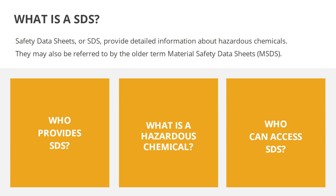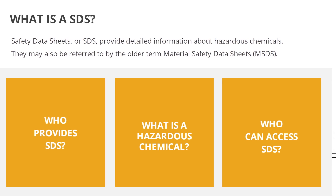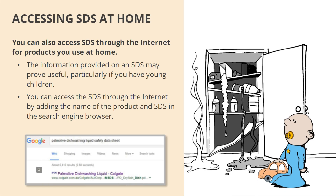They may also be referred to by the older term Material Safety Data Sheets. You can also access SDS through the internet for products you use at home. The information provided on an SDS may prove useful, particularly if you have young children. You can access the SDS through the internet by adding the name of the product and SDS in the search engine browser.